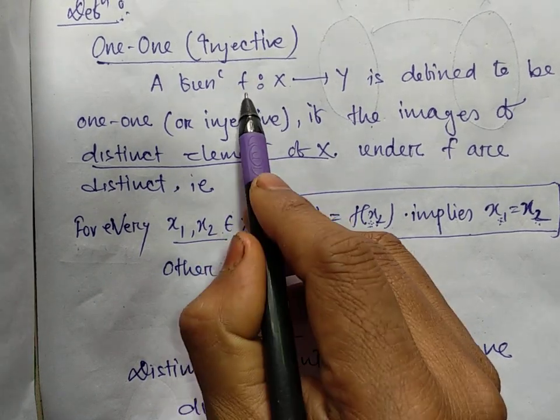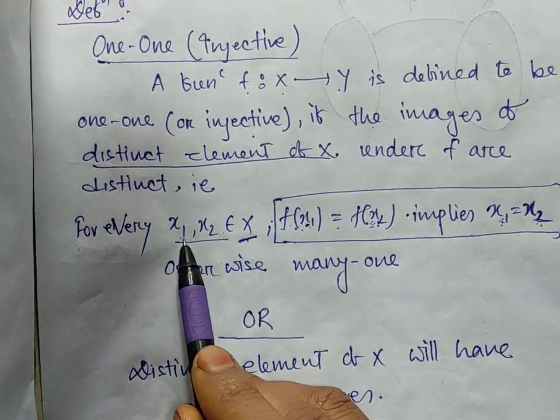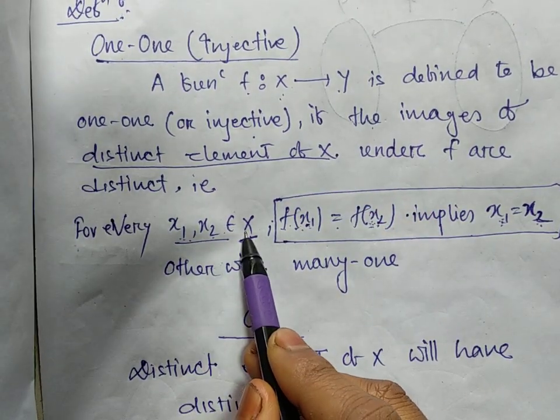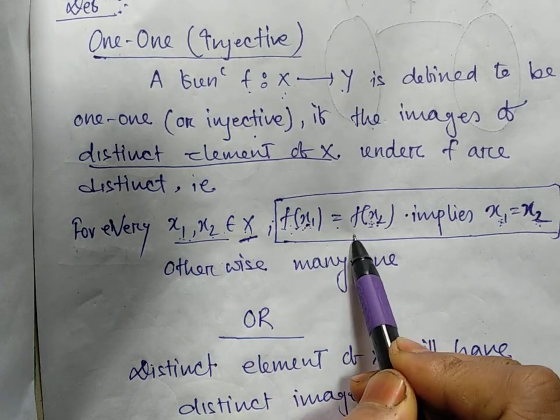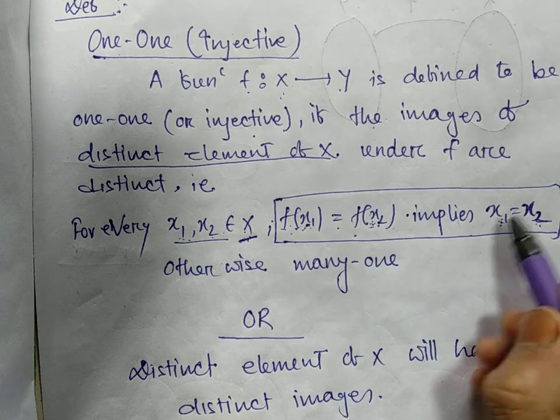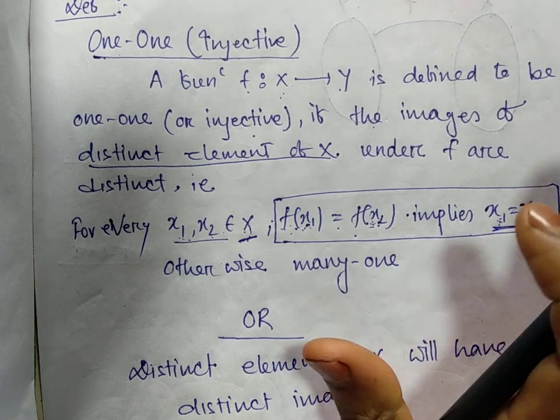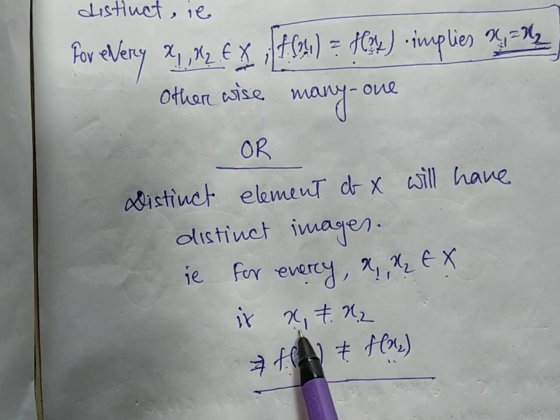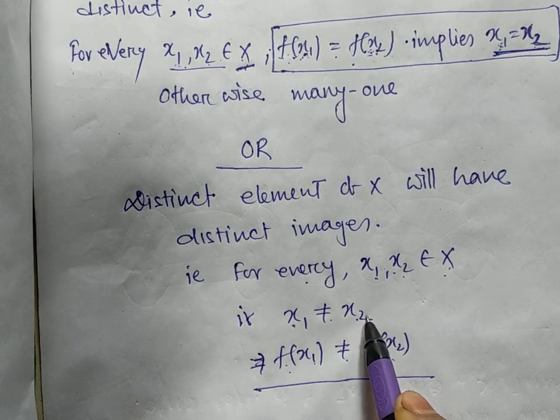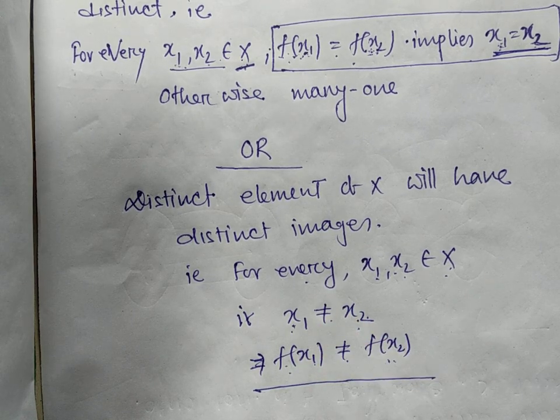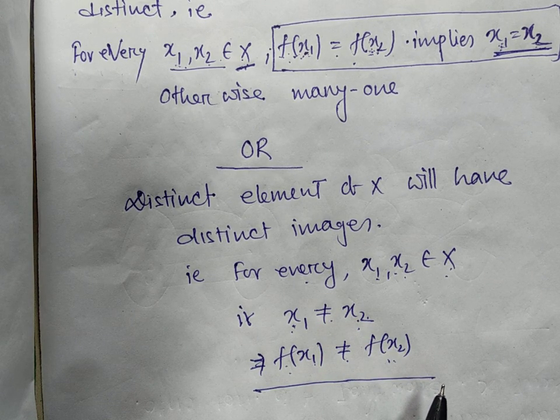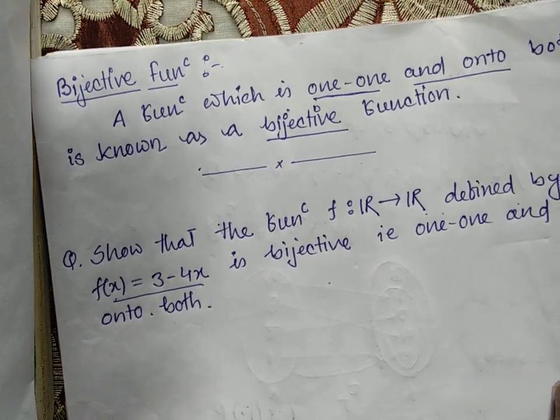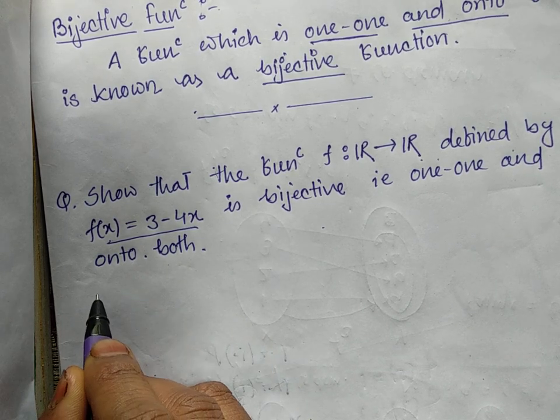The first method: If the function is defined from X to Y, if x₁ and x₂ belong to X and the function is one-one, then f(x₁) = f(x₂) implies x₁ = x₂. Or if x₁ ≠ x₂, then f(x₁) ≠ f(x₂). There are two methods. I generally use the first method. So let us try to explain this question. Proof.